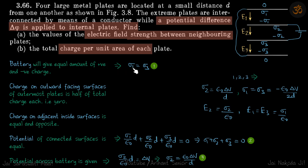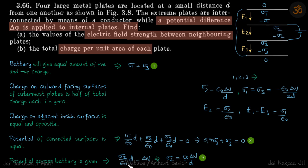The battery gives equal amounts of positive and negative charges. Sigma two and minus sigma two cancel out. The net charge on the two outer plates is minus sigma one plus sigma three, which equals zero, giving sigma three equal to sigma one. The potential across the battery is delta V, which equals sigma two by epsilon times d.